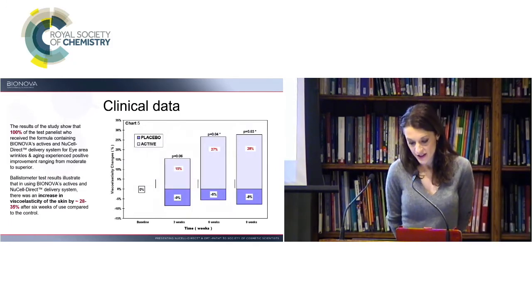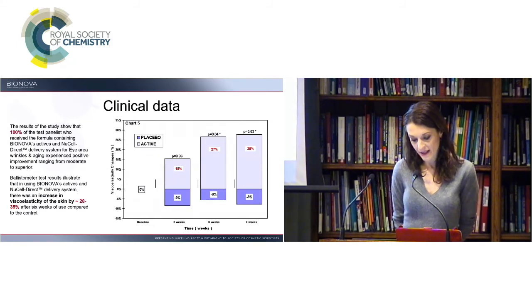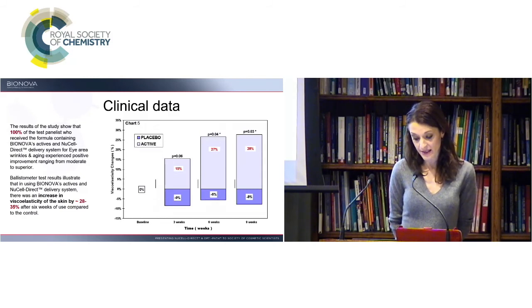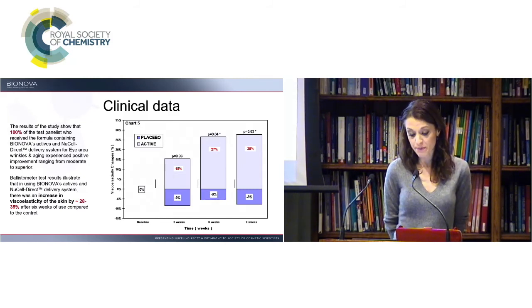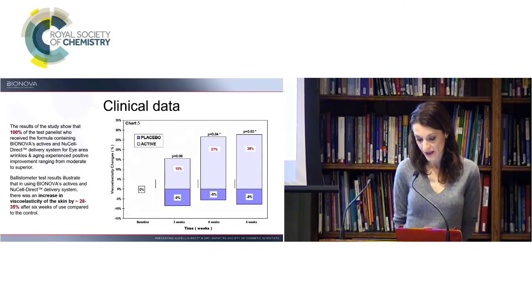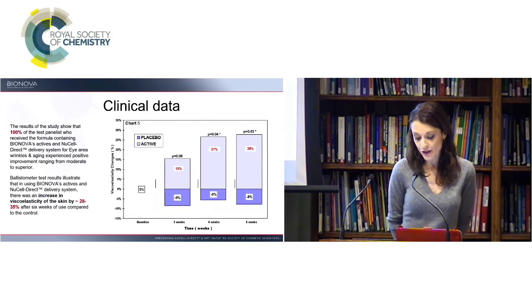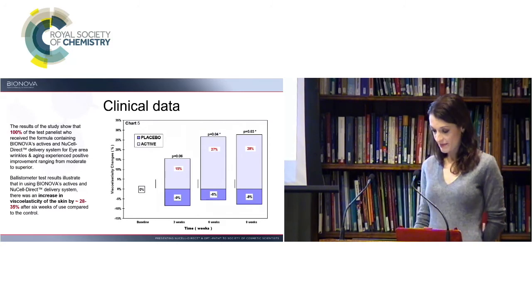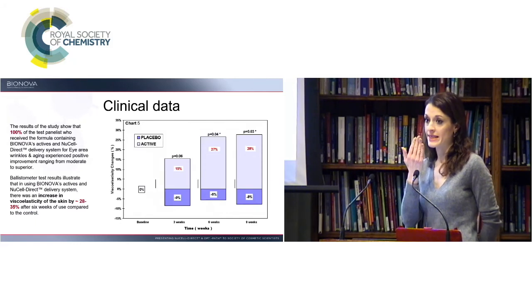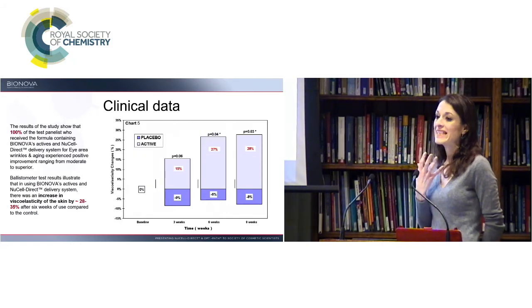So the result of this study showed that 100% of the test panelists who received the formula containing Bionova's actives and new cell direct system for eye area wrinkles and aging experienced positive improvements ranging from moderate to superior. Test results illustrates that in using Bionova's actives and new cell direct delivery system, there was an increase in the elasticity of the skin by 28% to 35% after six weeks compared to the control test. So this talks about the anti-aging process and our ability to regenerate new skin cells and to treat aging skin.